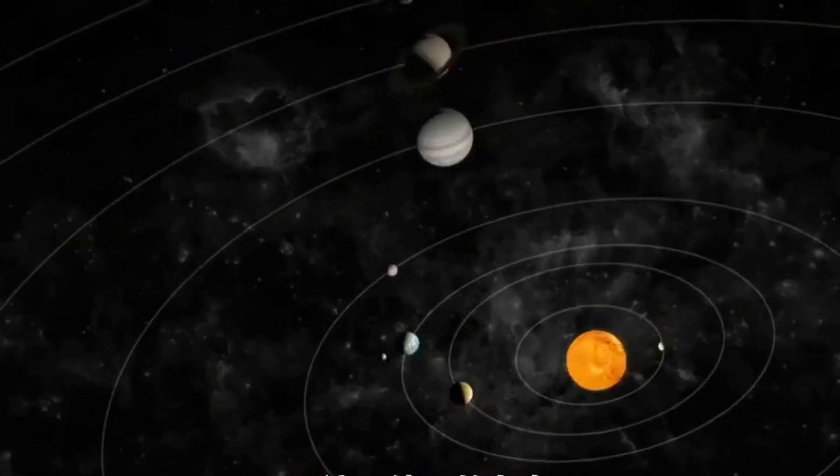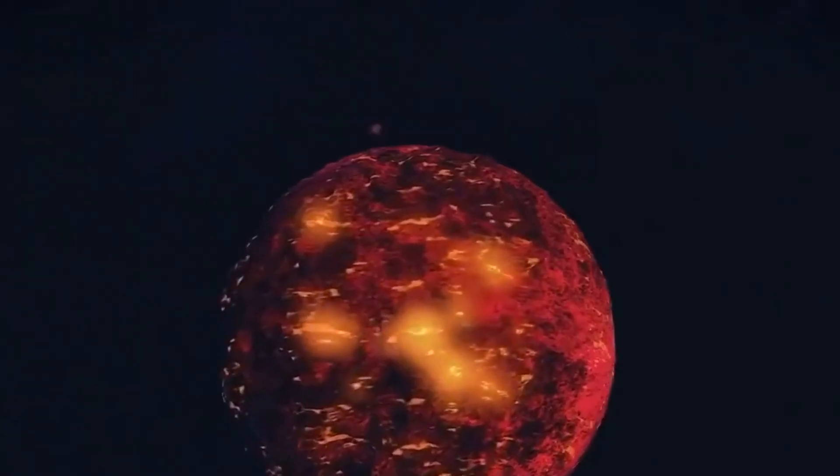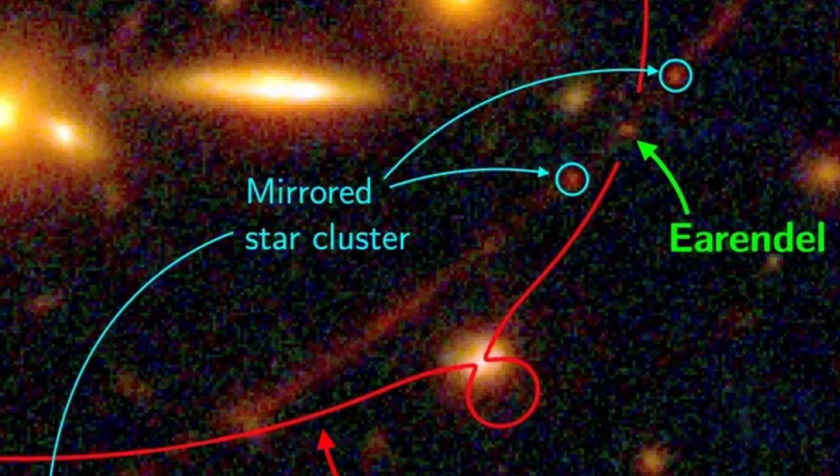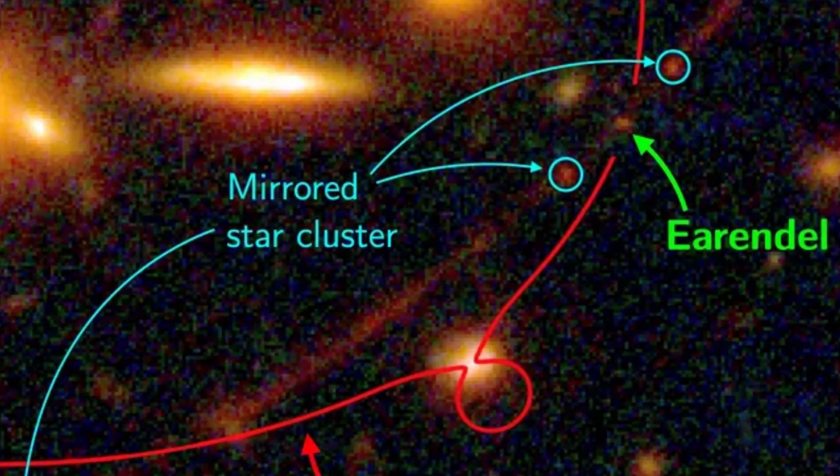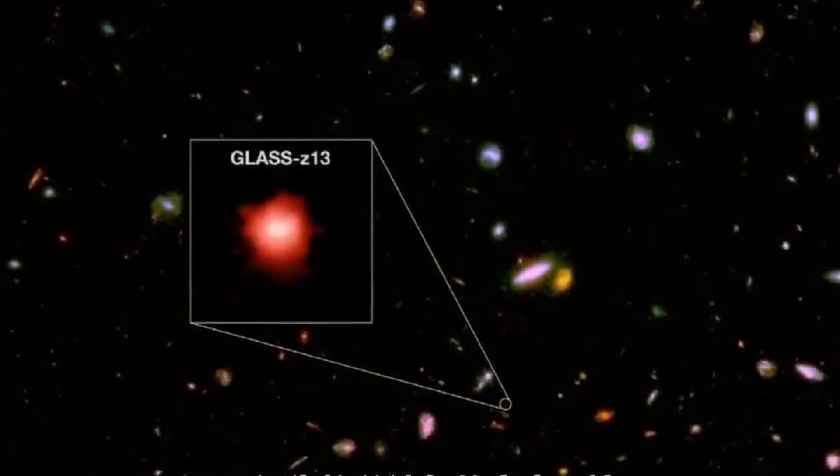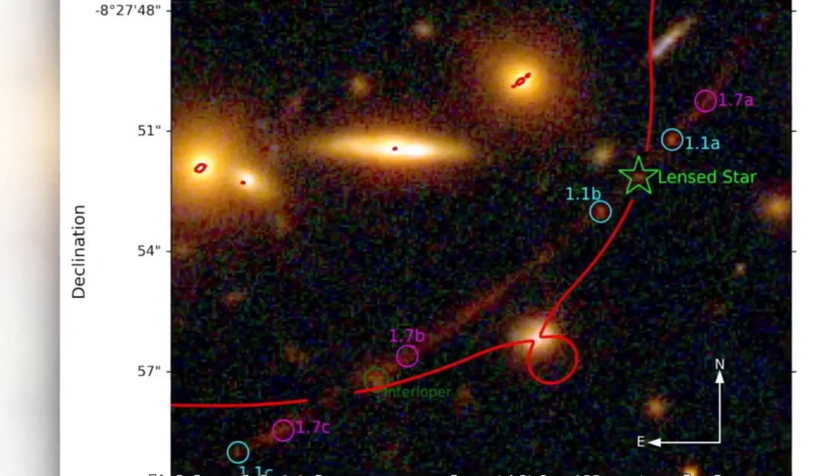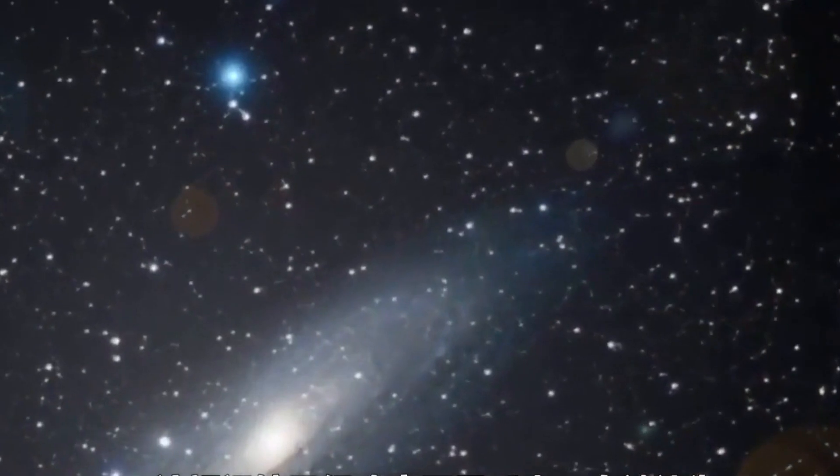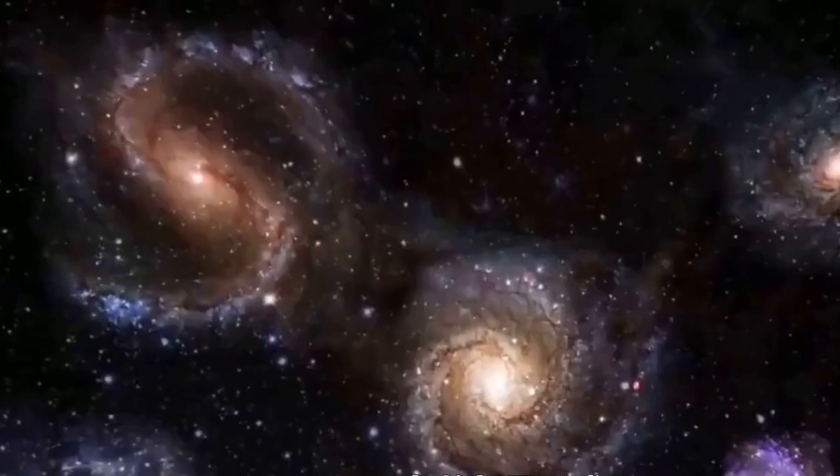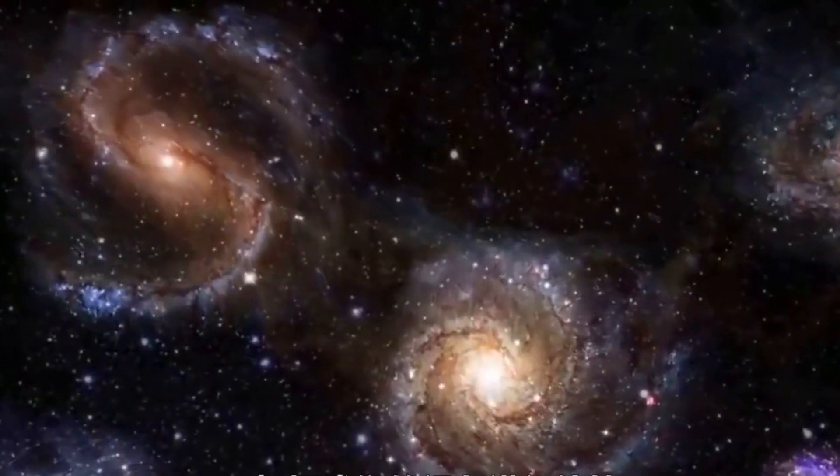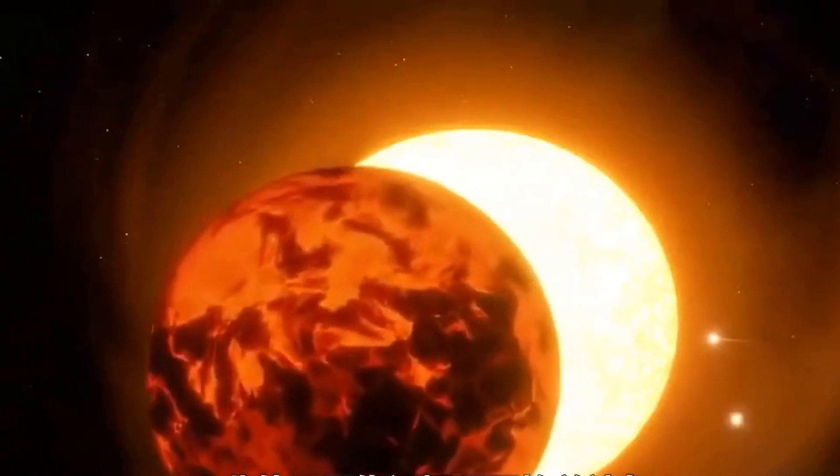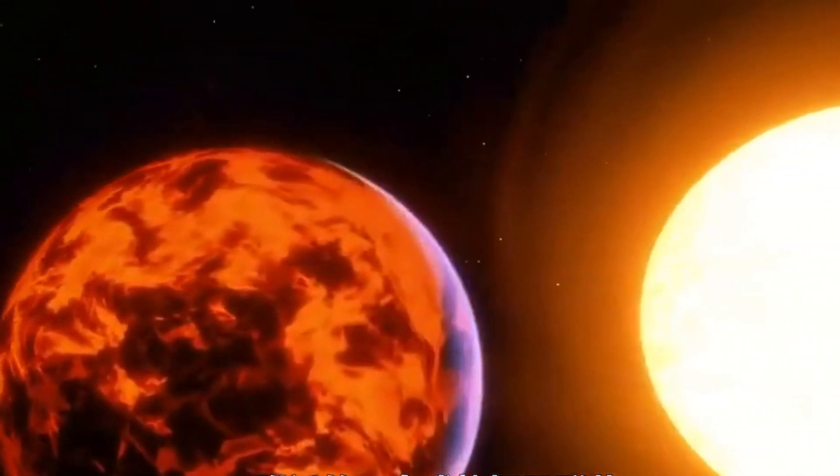The JWST's observations also offer insights into Earendel's cosmic surroundings, specifically its host galaxy, the Sunrise Arc. The telescope has identified a star-forming region within the galaxy, estimated to be less than 5 million years old based on our perspective. Additionally, the imagery has uncovered a mature star cluster near Earendel that appears to be gravitationally stable, possibly persisting to the present day.